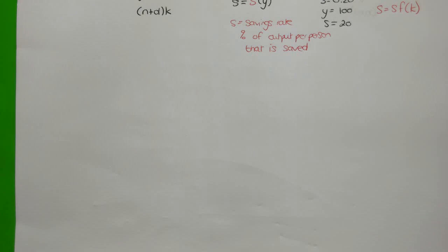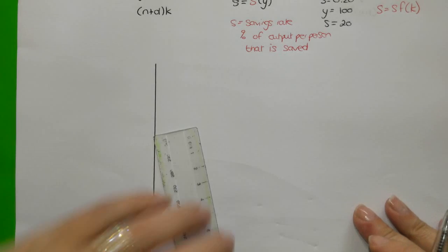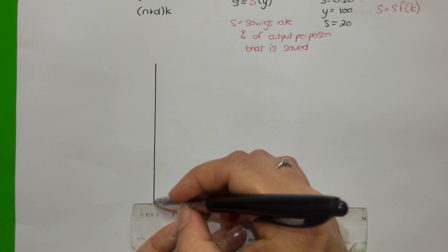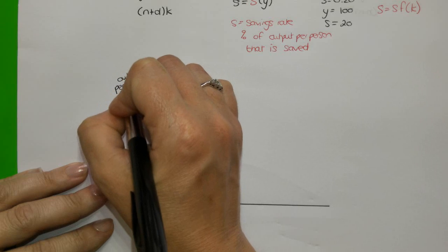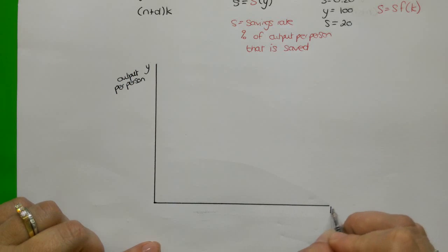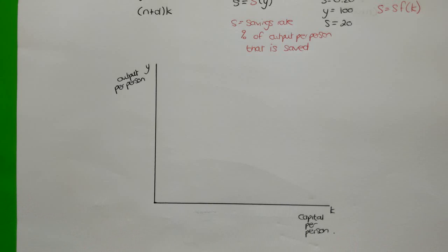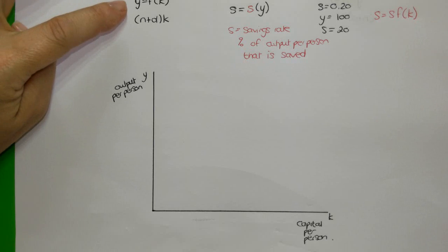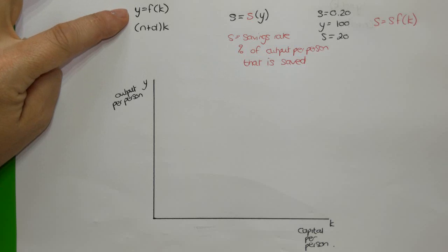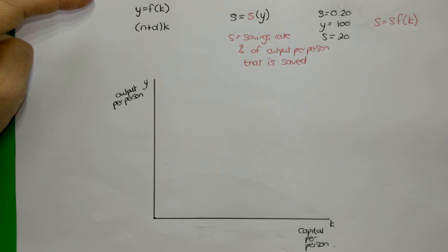So we're going to draw the set of axes — it's the same set of axes that we have been using up until now. On the vertical axis we have output per person, and on the horizontal axis we have capital per person, or the capital to labour ratio. What we want to do is graph the Savings Function. In order to graph it, we have to take note of the relationship between the Savings Function and the Production Function. So I'm going to draw in the Production Function first, and then we will think about how the Savings Function links to the Production Function.